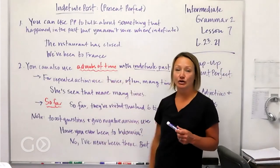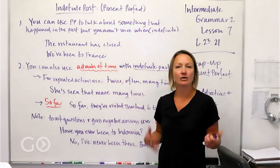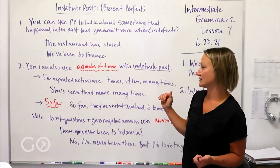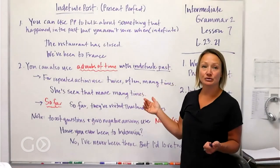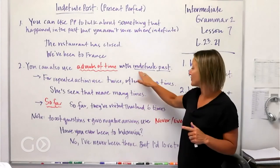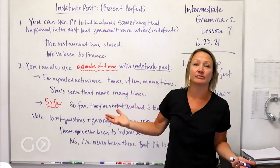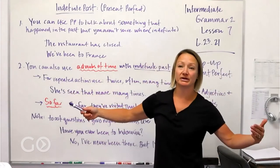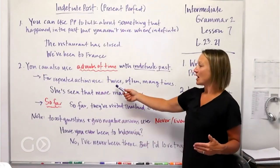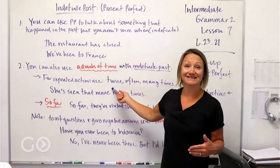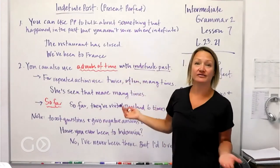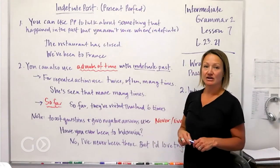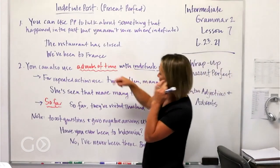Let's also look at adverbs of time and how we can use them to give a little more specificity to this tense. You can use adverbs of time with the indefinite past. For example, when we talk about things that have happened repeatedly, we say 'I have been to France twice,' 'I have been to France often,' 'I have been to France many times' — those are all things we could easily put in this sentence.